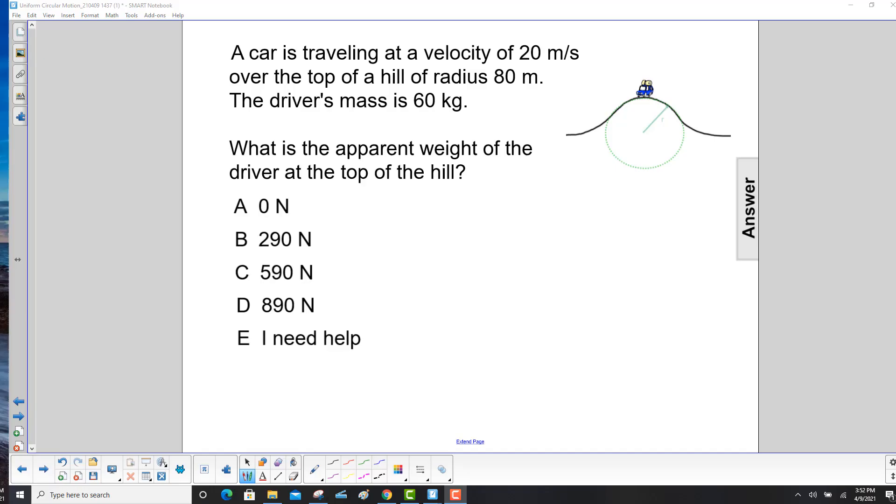A car is traveling at a velocity of 20 meters per second, so that's our V, over the top of a hill of radius 80 meters, so that's our R, and the driver's mass is 60 kilograms, so that's M. What is the apparent weight of the driver at the top of the hill?